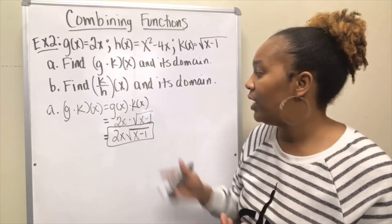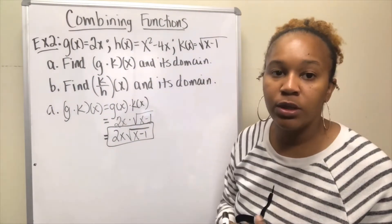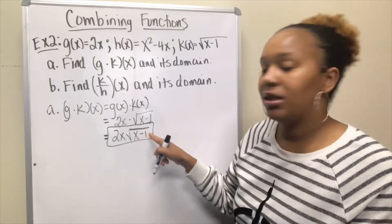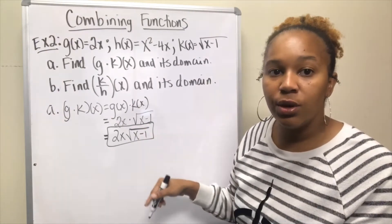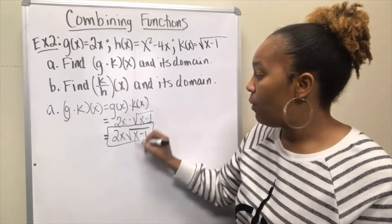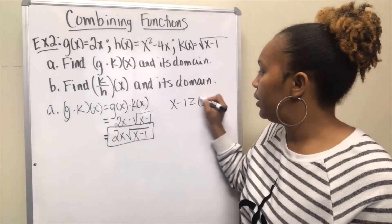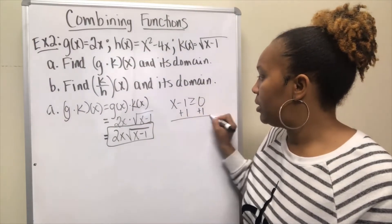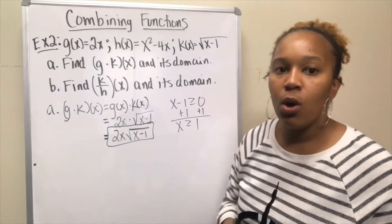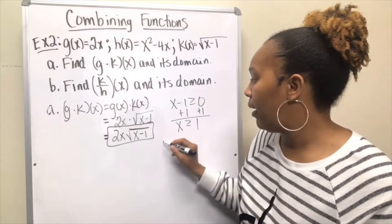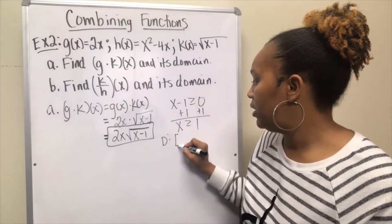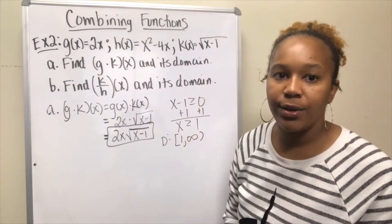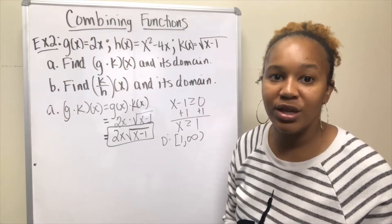To find the domain of 2x·√(x-1), this involves an even root, so what's underneath the square root must be greater than or equal to zero. Setting x - 1 ≥ 0 and adding one to both sides gives x ≥ 1. So the domain for this function is [1, +∞) — a bracket around the one means you can only plug in numbers that are one or bigger.